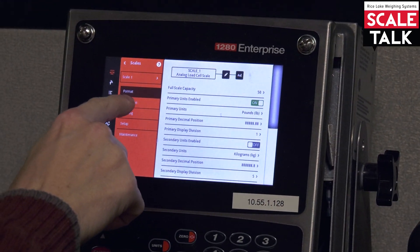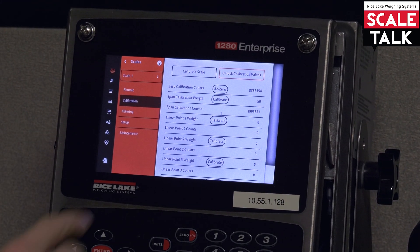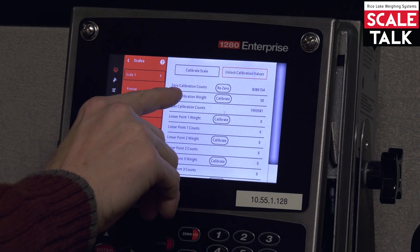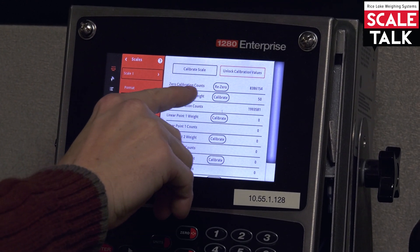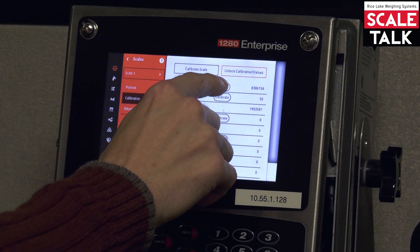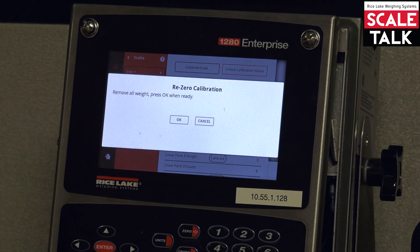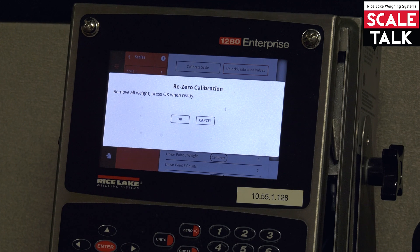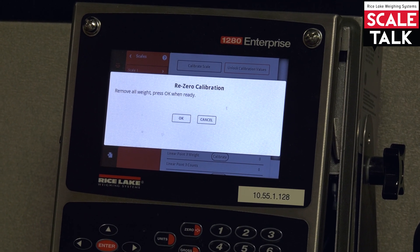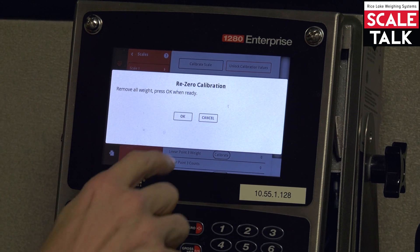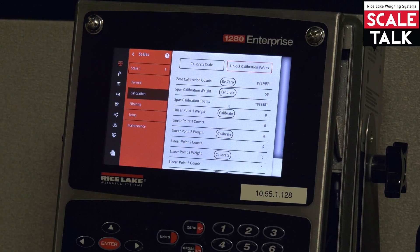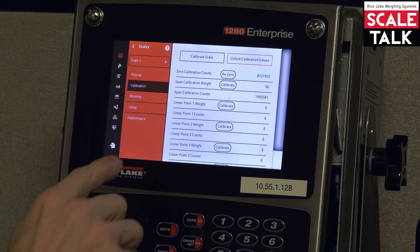So let's hop back into our menu. Go to scales. Go to calibration. And right here you see we have this little option here called re-zero next to zero calibration count. So we're going to go ahead and press that re-zero. It lets us know to remove all the weight. So we don't have any weight on our scale at the moment. This is what's reflecting our zero. And then we'll press okay. Now we'll save and exit one more time.